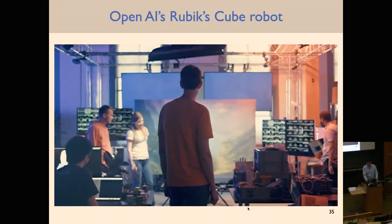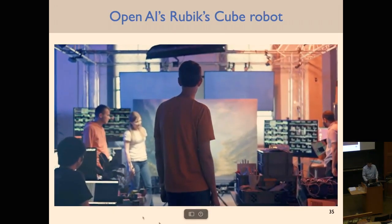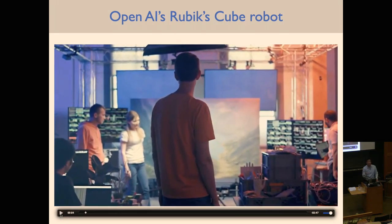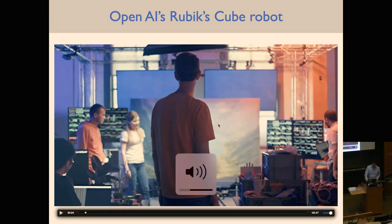These ingredients — domain randomization, good simulation, reward shaping, and curriculum training — are not specific to locomotion. As a different domain example, OpenAI's Rubik's Cube solving system uses a robotic hand to solve a Rubik's Cube one-handed, which is challenging even for humans.